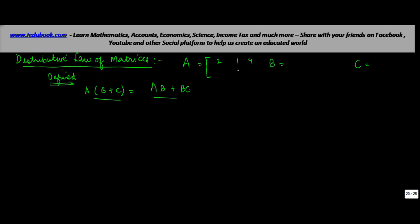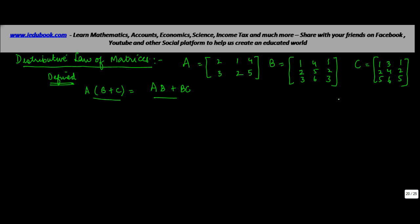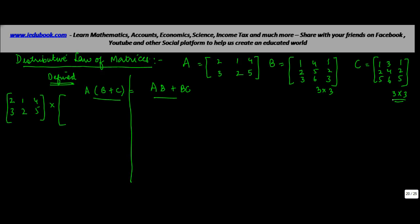I'll give some values to these matrices. This time I'm not going to keep them as exhaustive as the associative ones. Let A equal to 2, 3, 1, 2, 4, 5. B equals to 1, 2, 3, 4, 5, 6, 1, 2, 3. And C equal to 1, 2, 5, 3, 4, 6, 1, 2, 5. On the left-hand side, we've got A into B plus C. Both B and C are 3 by 3, so addition is possible. Let's find the value of B plus C.